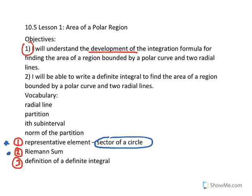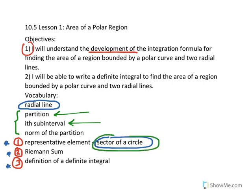Today we're going to use the pre-calculus formula for the area of our representative element, which is a sector of a circle. The Riemann sum would give us a sum of areas of n sectors of a circle, and then we take the limit of that Riemann sum to get our definite integral. Vocabulary we've seen before includes radial line, and these terms also appeared when we looked at the derivation of arc length in section 7.4. You begin with an interval and partition it into subintervals, and on each subinterval you have a representative element — a sector of a circle — to approximate the area for that subinterval. The width of the largest subinterval is called the norm of the partition.